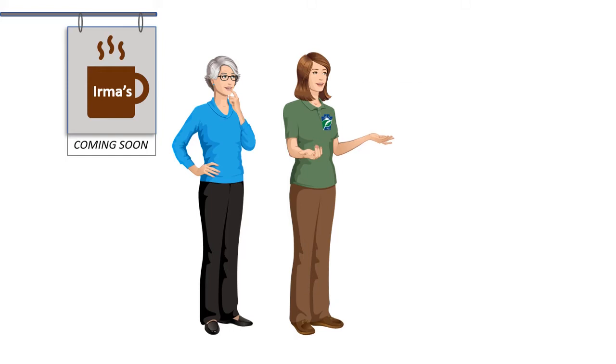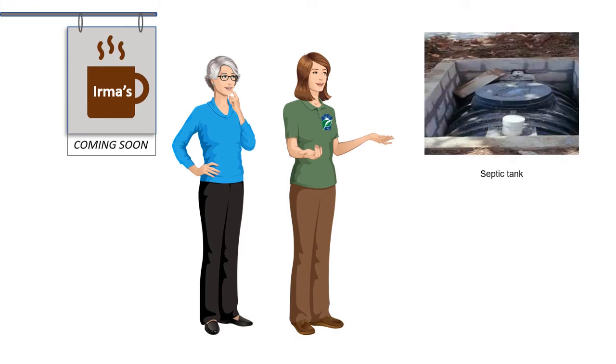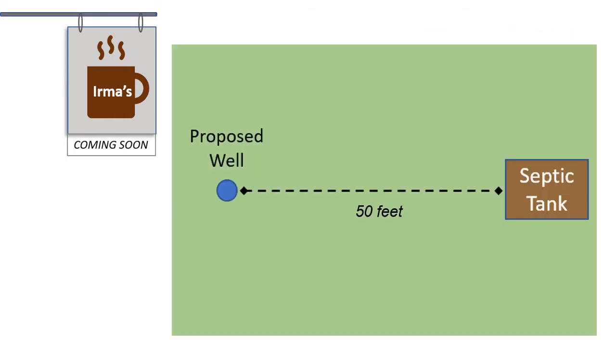For example, the well must be drilled far enough away from any potential sources of contamination to minimize the risk of contaminated water reaching the well. The required distance between the well and a potential source of contamination is called the setback distance, and there are different required distances depending on the potential source of contamination.